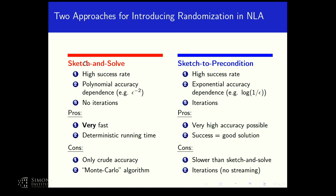Each approach has its advantages. For sketch-and-solve, if you design the algorithm correctly, you get high success. But the dependence on accuracy is polynomial — if you want epsilon accuracy, your dependence on epsilon is polynomial. Since there's no iteration and you're basically just going over the data once, sketching and working on it, it's very fast and the running time is deterministic. However, you only get crude accuracy, and it's a Monte Carlo algorithm — you don't really know if the solution is good; you hope with high probability it is.